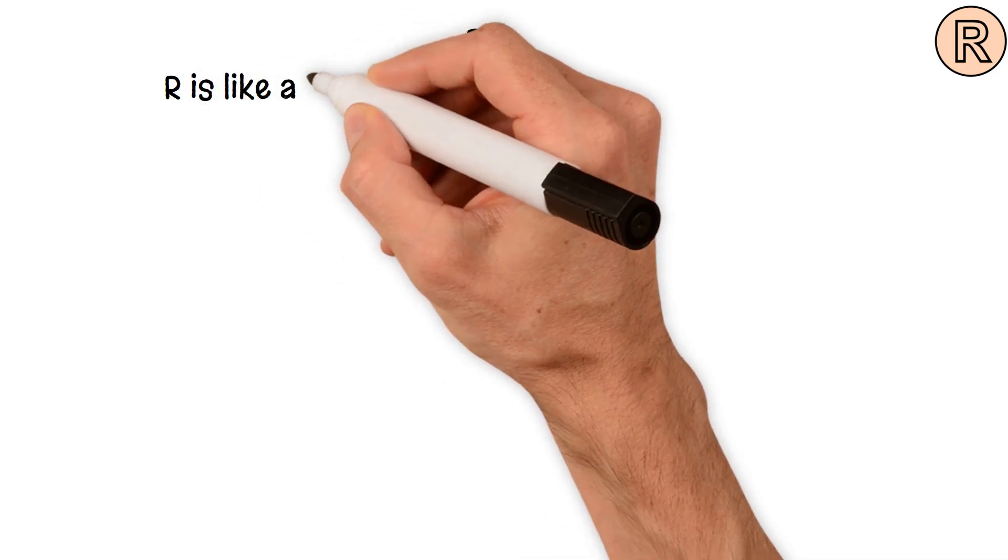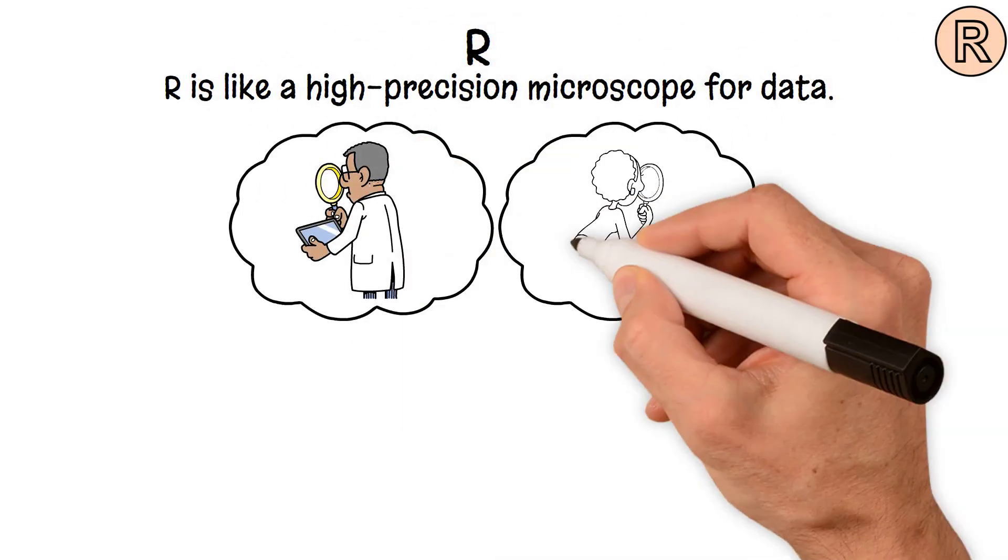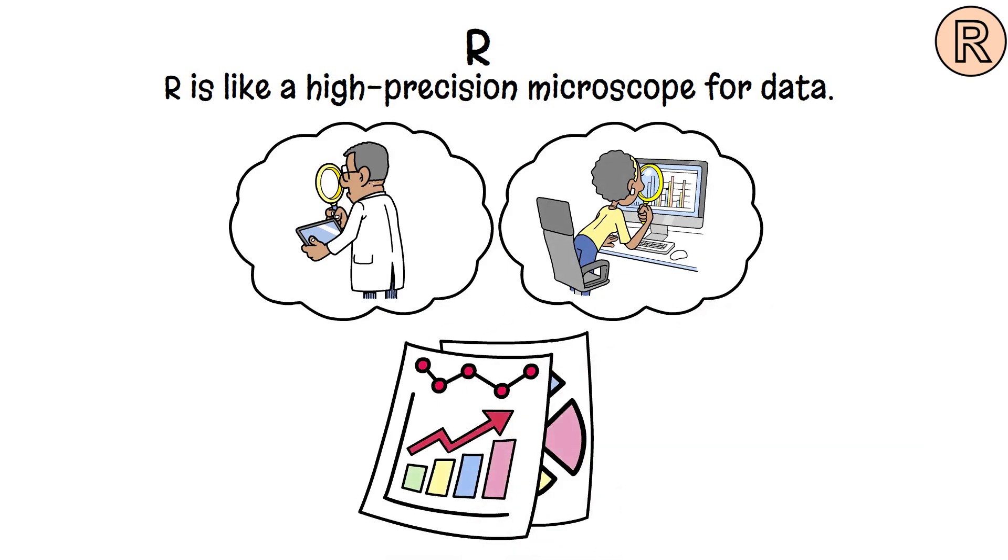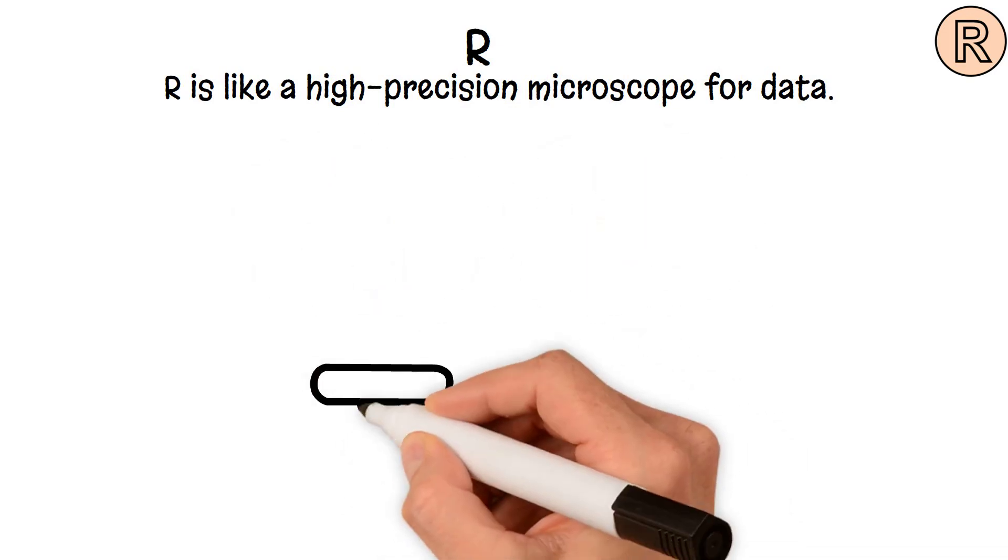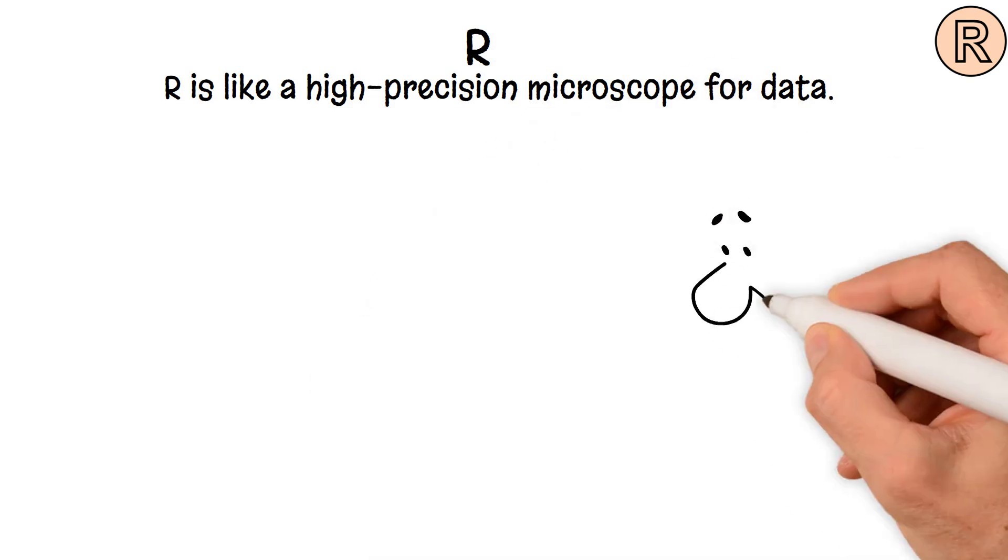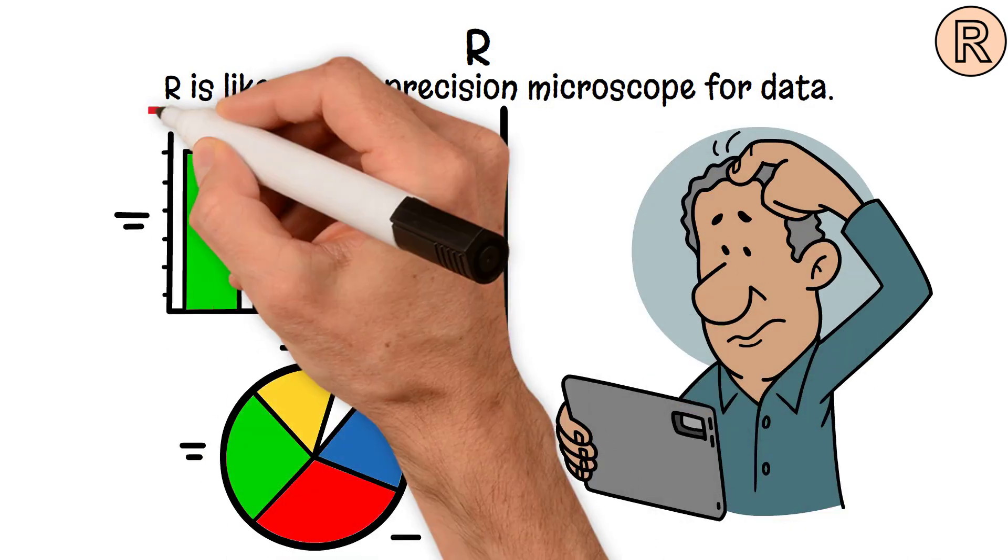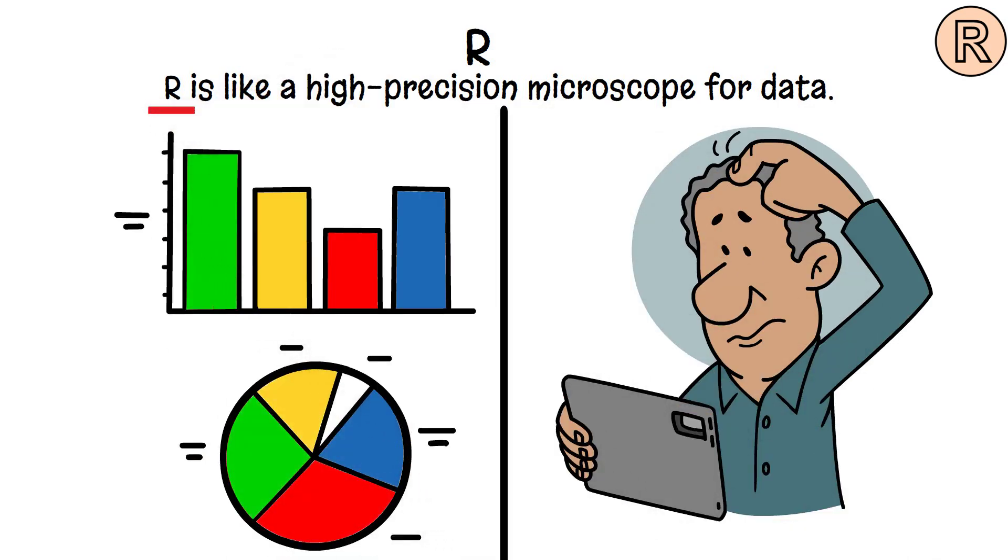R. R is like a high-precision microscope for data. Scientists and statisticians turn to R for detailed data analysis and visualization, much like researchers use microscopes to observe things unseen by the naked eye. Whether you're exploring complex datasets or crafting intricate graphs, R provides the tools to see the finer details of your data.